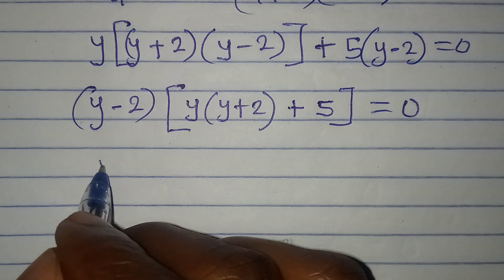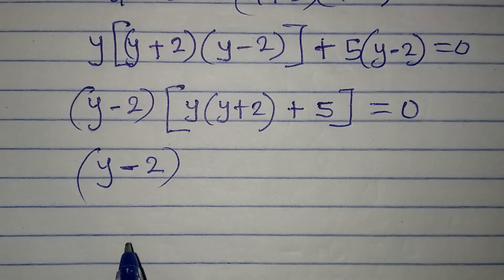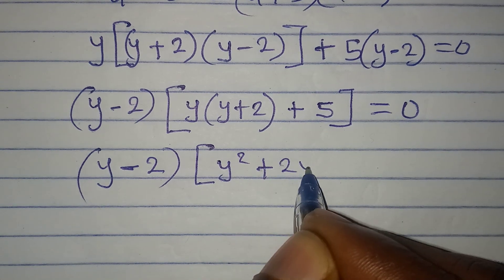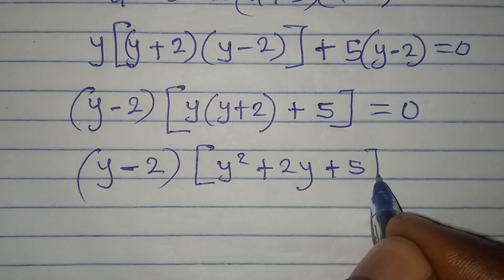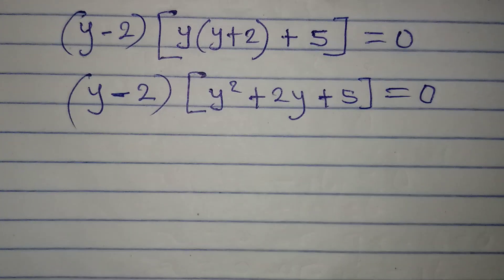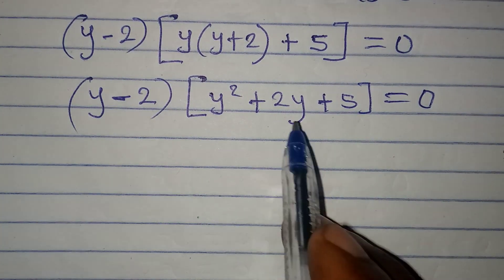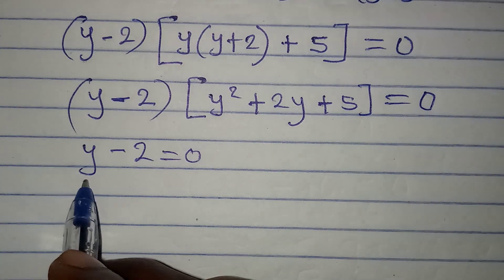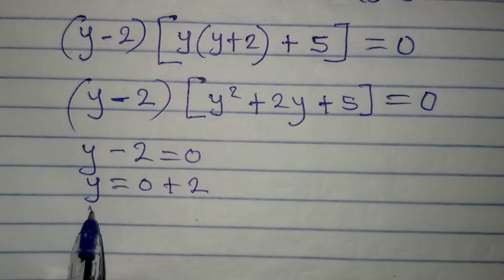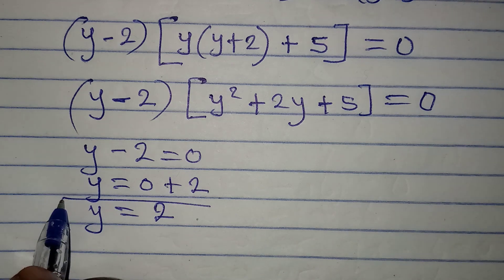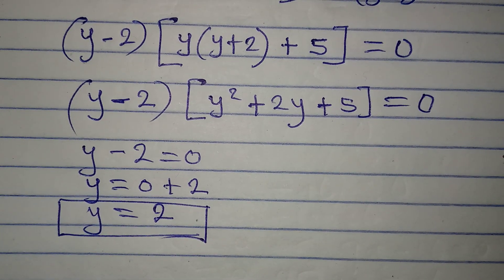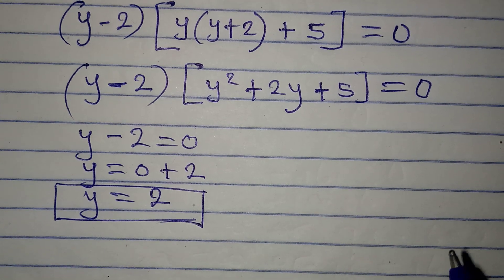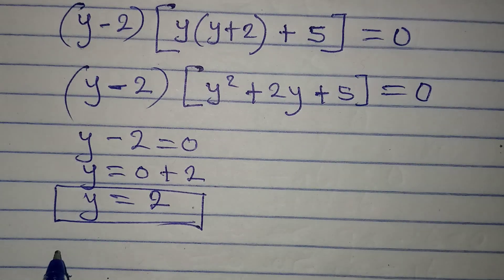Opening the inner bracket gives y squared plus 2y plus 5 equals zero. Now we apply the zero product rule: either y minus 2 equals zero, or y squared plus 2y plus 5 equals zero. From y minus 2 equals zero, y is equal to 2. This is one of the solutions, though not the original variable — we'll get back to it.